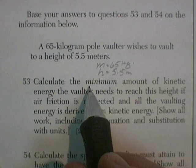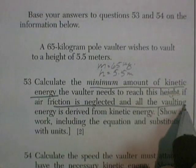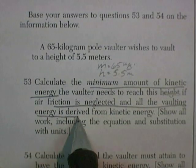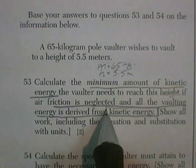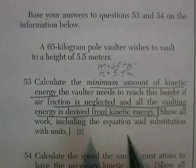Calculate the minimum amount of kinetic energy the vaulter needs to reach this height if friction is neglected, and all the vaulting energy is derived from kinetic energy. Show all the work including the equation substitution with units for two points.